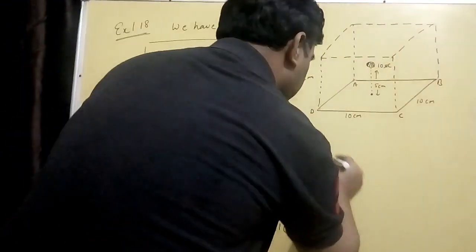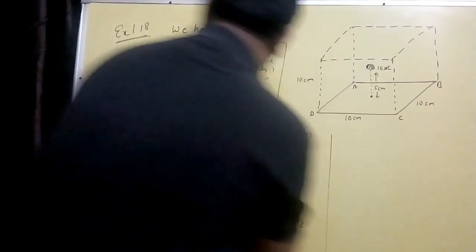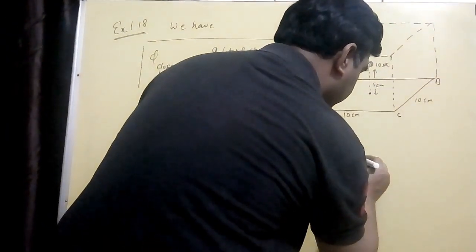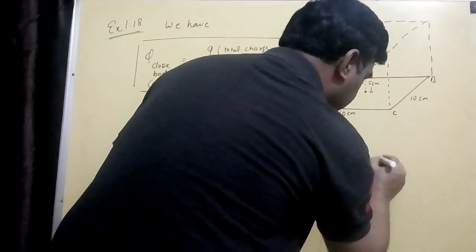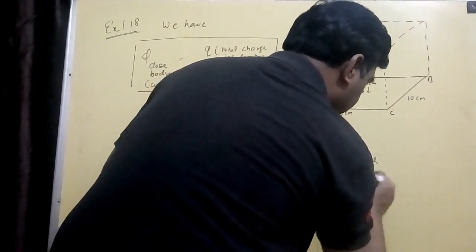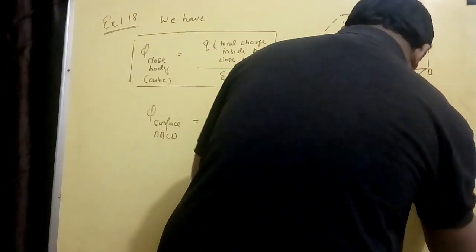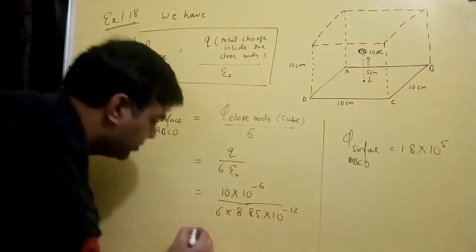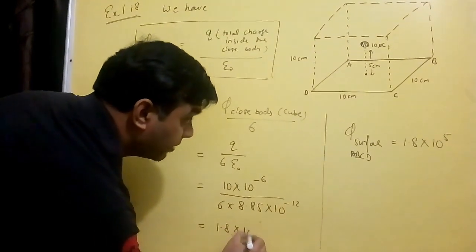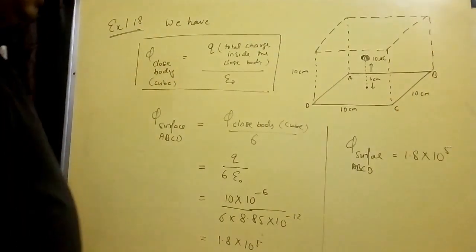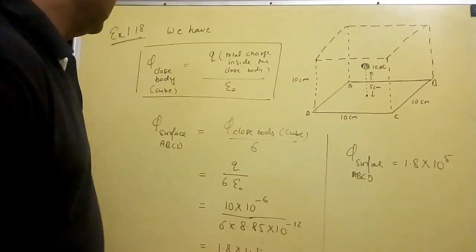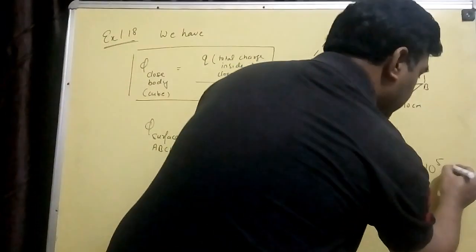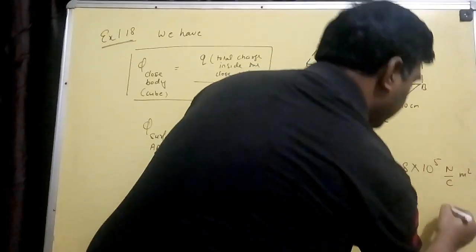When you solve this, flux of surface ABCD will be 1.8 into 10 to the power of 5. When you solve all this data, you will get 1.8 into 10 to the power of 5. The flux unit is Newton per coulomb meter square.